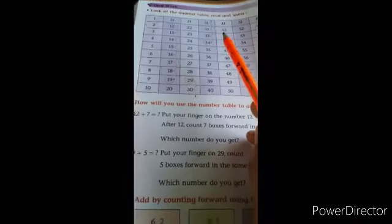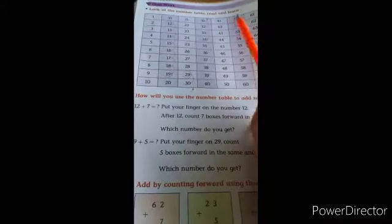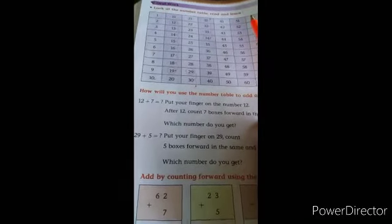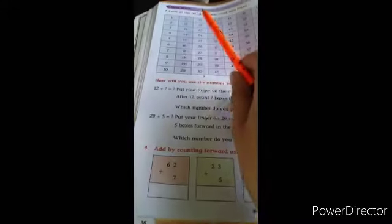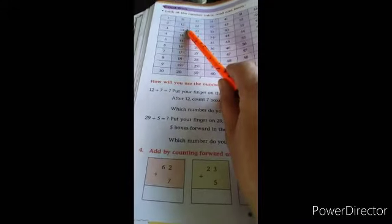Look at the numbers table, read and learn. Now children, open workbook page number 38. See here 12 plus 7. Here 1 to 100 numbers are given. Now see 12 plus 7. You search the 12 number and go front 7 steps. 12, then 1, 2, 3, 4, 5, 6, 7.